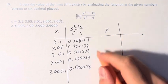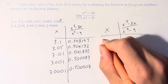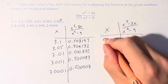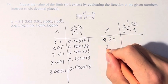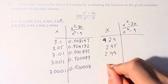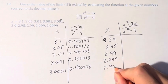So you have these x values, and again we're evaluating x squared minus 3x over x squared minus 9. So we have 2.9, we have 2.95, 2.99, 2.999, and 2.9999.